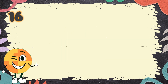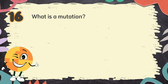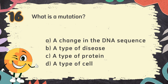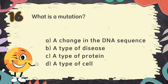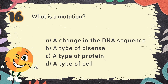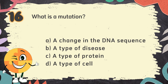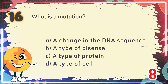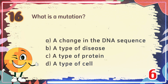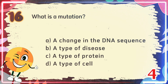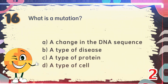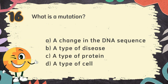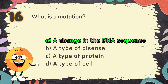Number 16. What is a mutation? The choices are A. A change in the DNA sequence, B. A type of disease, C. A type of protein, D. A type of cell. The correct answer is A. A change in the DNA sequence.